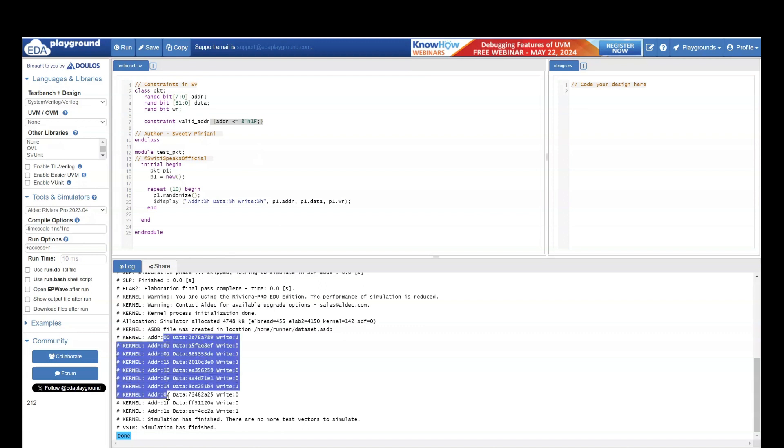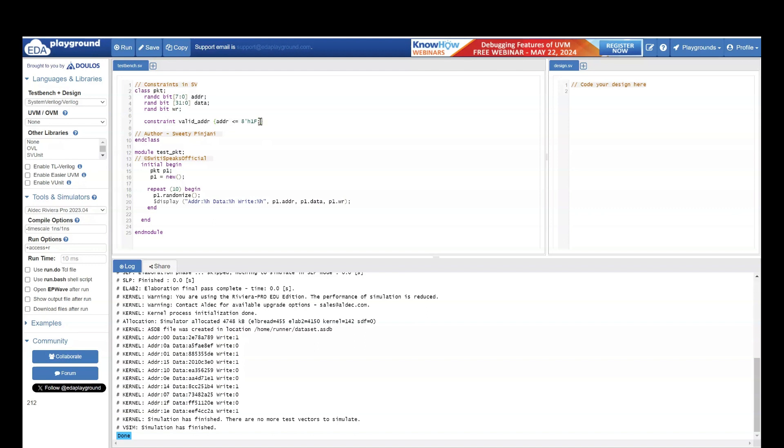And if you can see, it has generated only the valid values, which is the values which are less than 1f. The maximum value should be 1f less than equal to 1f. So 1f is the maximum value. It has not crossed that value. This means that I am able to generate the values within the required range. This is how constraint works.